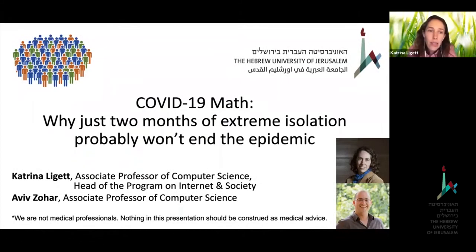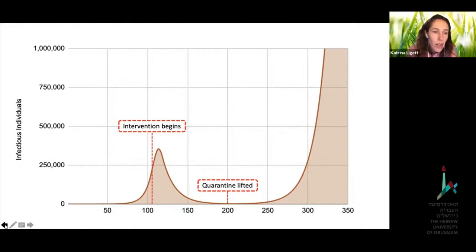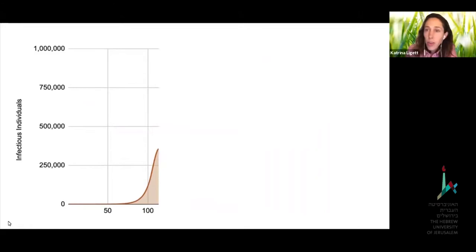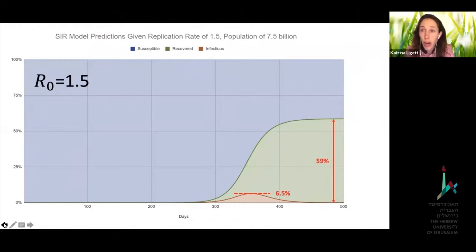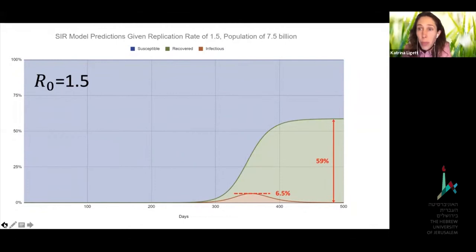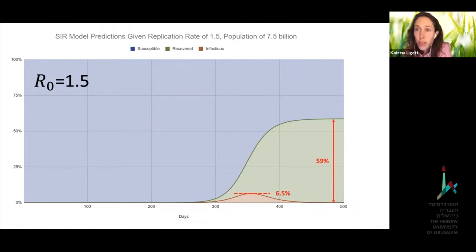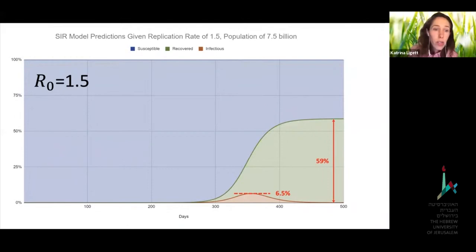Does everyone eventually get the virus? No — as we saw in those slides, not necessarily everybody is going to get the disease. Even if we never get a vaccine, if we can keep our effective R low enough — for example, if our effective R is one and a half, which might actually be achievable without major interference in day-to-day life — then only about 60 percent of the population would ever need to get the disease before it dies out. 60 percent is still a lot, but if we can get our effective R even lower, fewer people would need to have the disease before we collectively reach enough immunity.